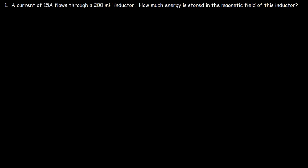In this video we're going to talk about how to calculate the energy stored in an inductor and also in a magnetic field. In this example we have a current of 15 amps flowing through a 200 millihenry inductor. This is the electrical symbol of an inductor, and here's the current that flows through it.